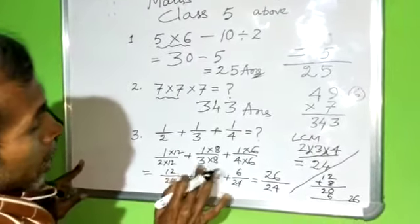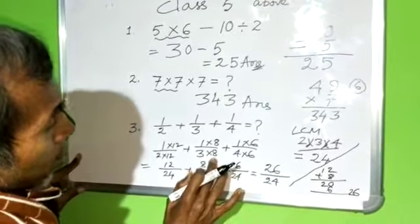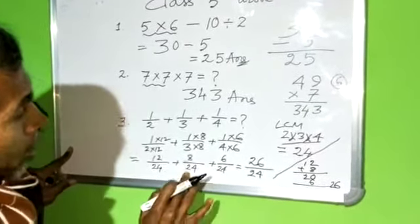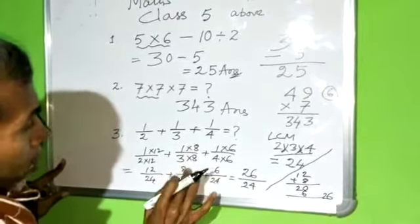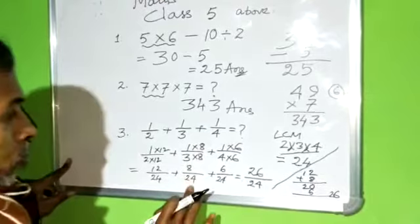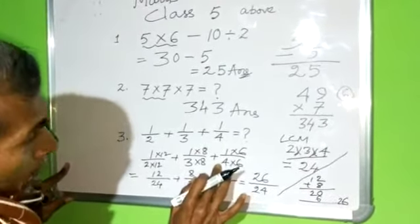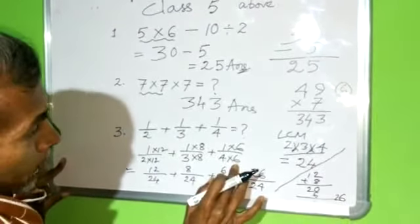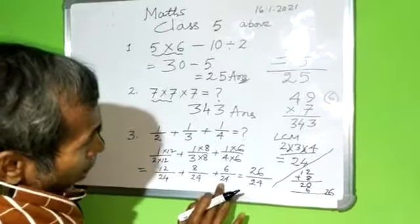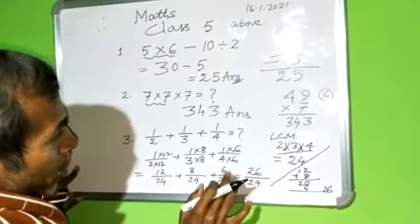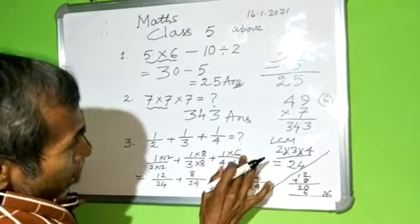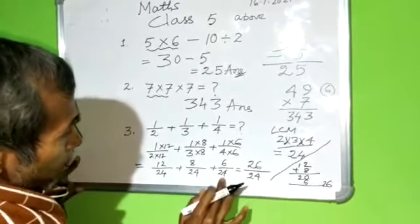Denominator is multiplied by 8, 24. Therefore upper part numerator should be multiplied by 8, therefore 8 by 24. Denominator is multiplied by 6, therefore 24. Upper part numerator should be multiplied by the same number, 6, therefore 6 by 24.